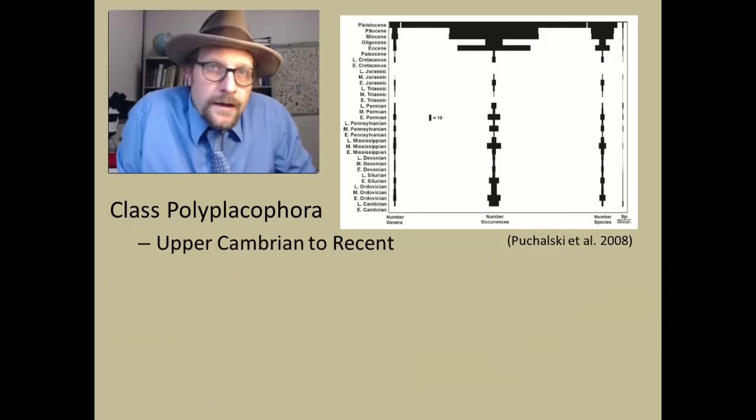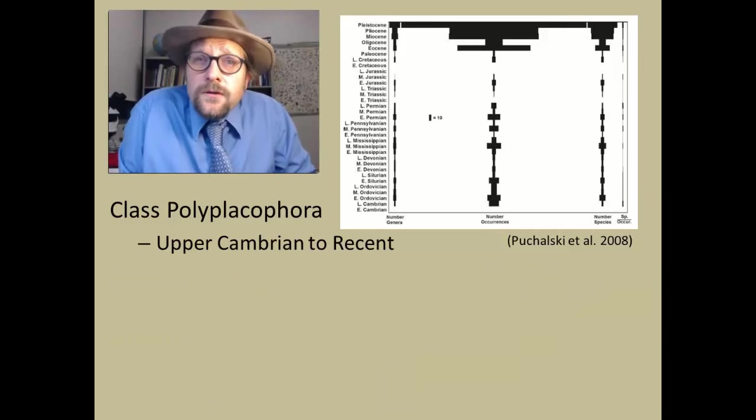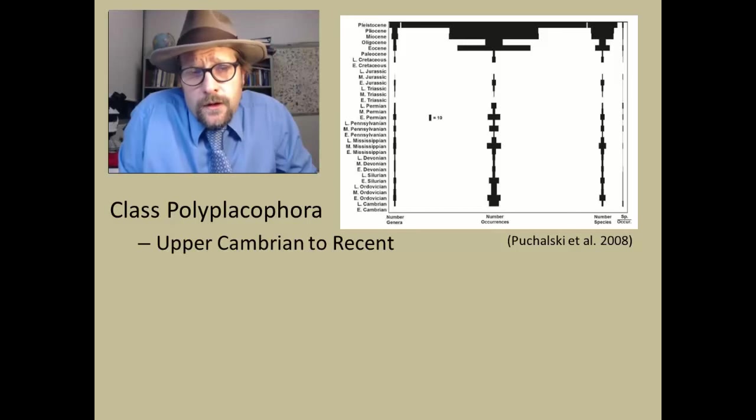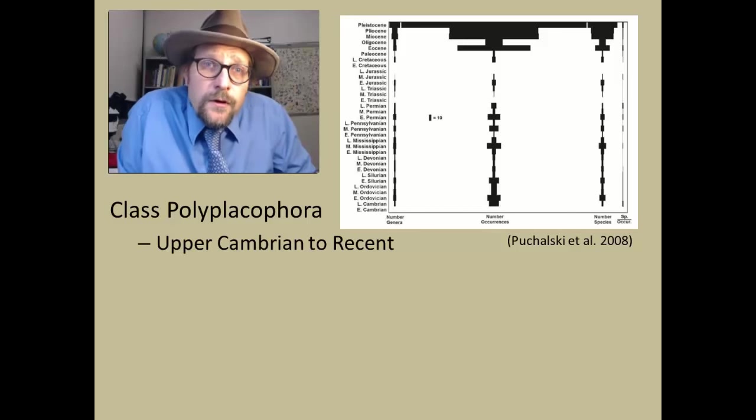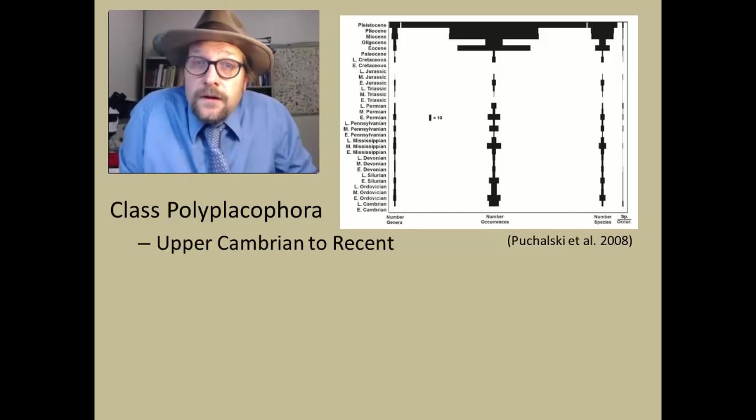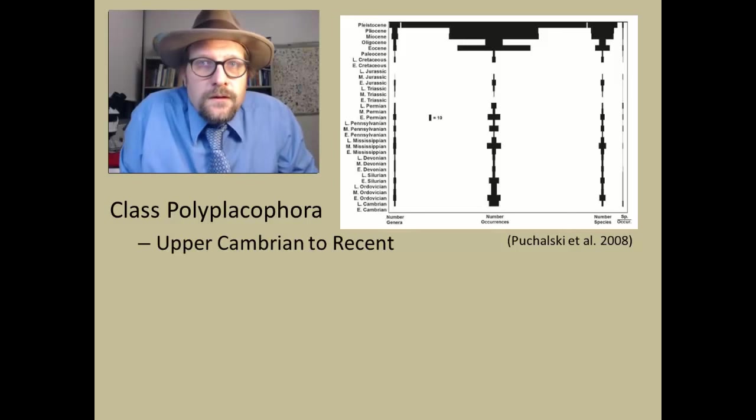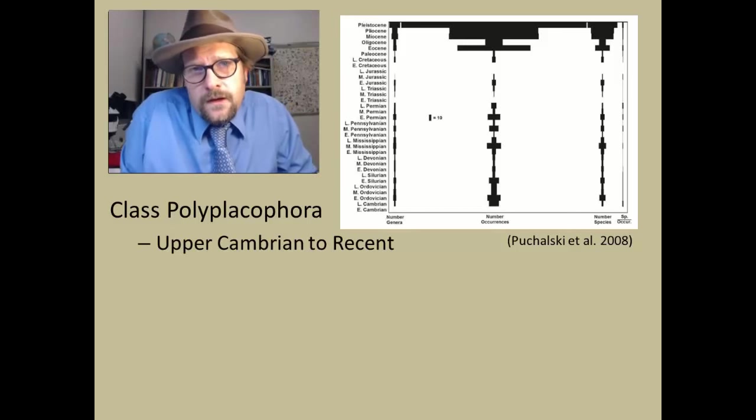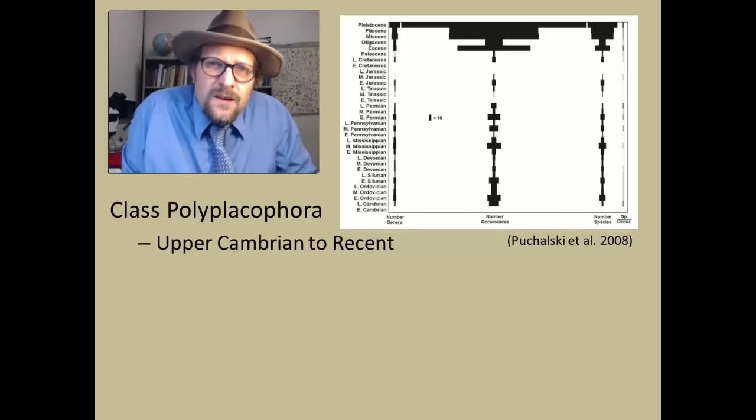The fossil record of the Polyplacophora is mostly late Cenozoic. With a number of occurrences dating back to the early Cambrian, they are not particularly well represented in the Mesozoic, and only a few forms are known during the Triassic. During the Oligocene onwards to the Pleistocene, they are much better represented in the fossil record. Many are small, but some forms got to be over about 10 cm in length.